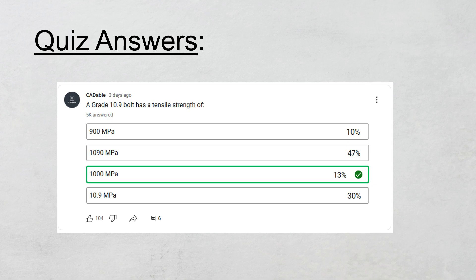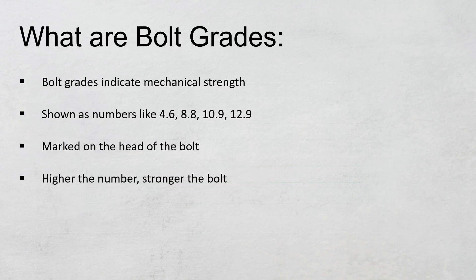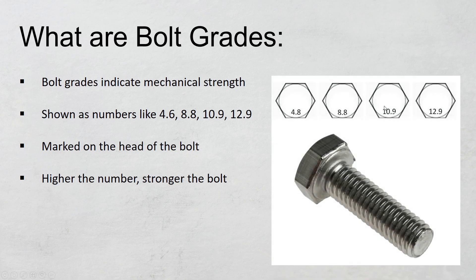So let's understand this concept. What are bolt grades? Basically, bolt grades indicate the mechanical strength of a bolt. As you can see, these numbers are marked on the head of a bolt.